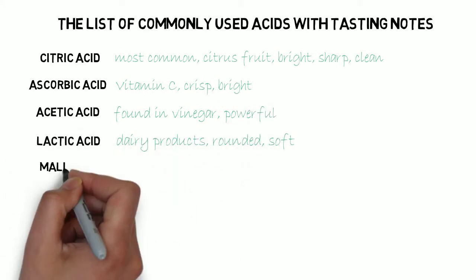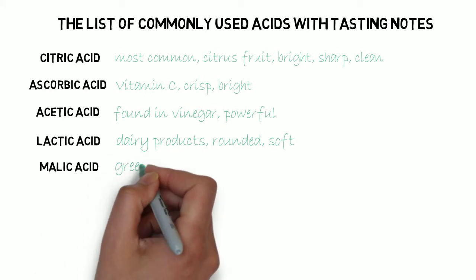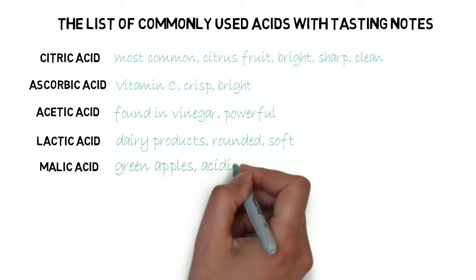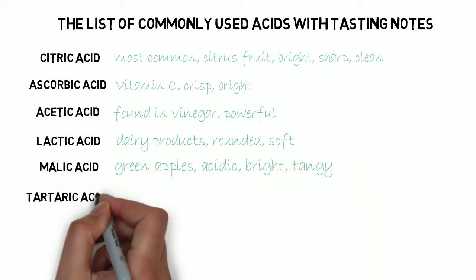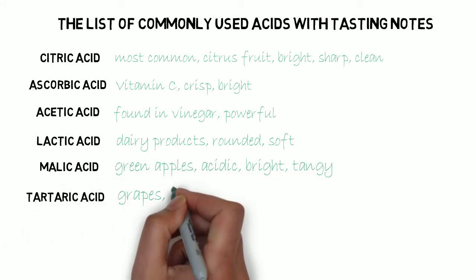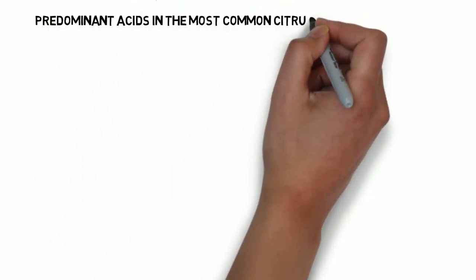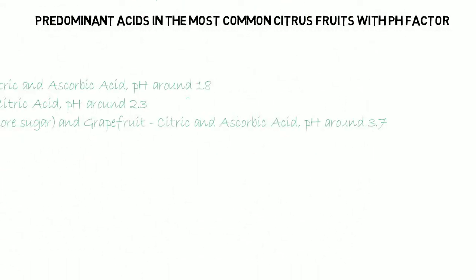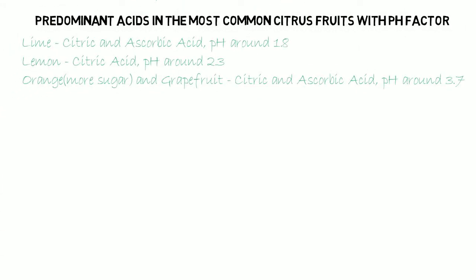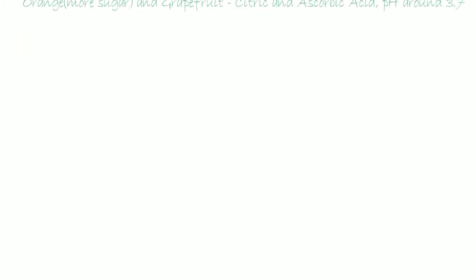Malic acid, found in green apples — acidic, bright and tangy. And finally tartaric acid in grapes, with an intense and clean taste profile. Also shown are the predominant acids in the most common citrus fruits with a pH factor, which is very helpful for cocktail making.